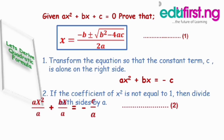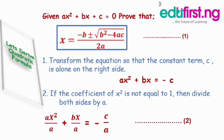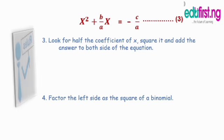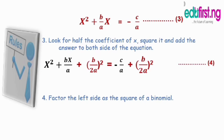Equation three gives us x squared plus bx over a equals negative c over a. Rule three says: look for half the coefficient of x, square it, and add it to both sides of the equation. The coefficient of x is b over a. Half of it means multiply by one half, giving b over 2a. Then square it: that gives b over 2a, all squared. Add this to both sides to get equation four.